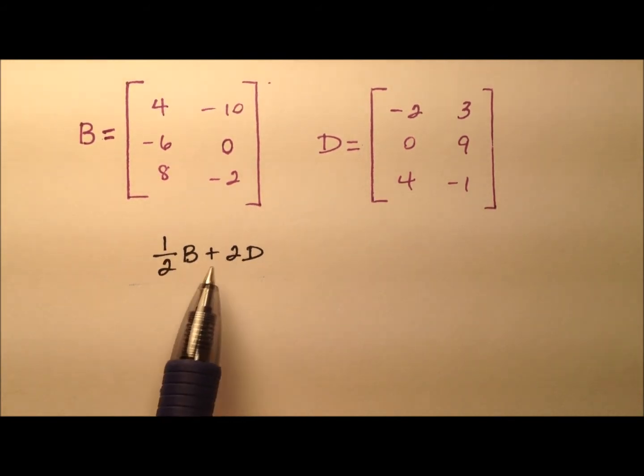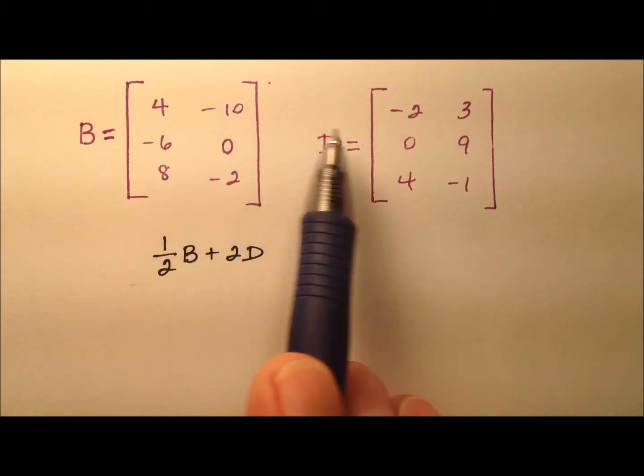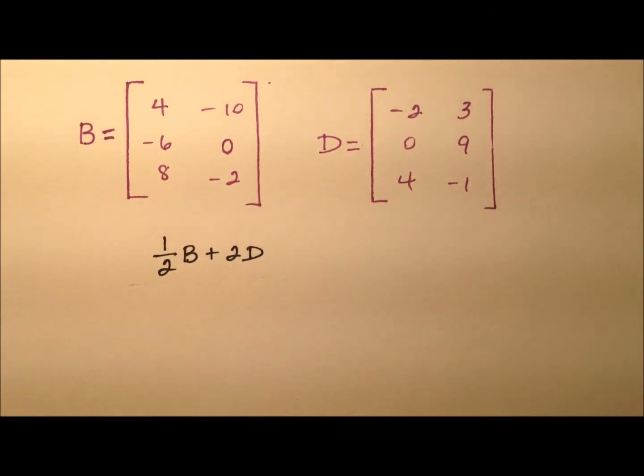Now, the 1 half and the 2 play the role as coefficients in front of these matrix variables, which means we're going to end up using scalar multiplication on these matrices before we add them. But of course, for matrix addition, we need to first make sure that these matrices are the same dimensions so we can indeed add them, or we can say the addition will be defined.